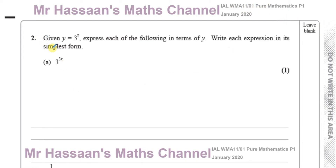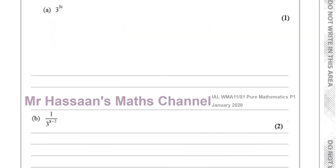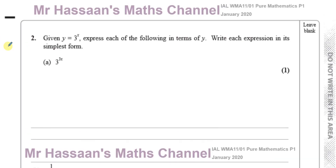Here it's telling us that we're given that y equals 3 to the power of x. We have to express each of the following in terms of y. So we have three different expressions here, a, b, and c, and we have to express them in terms of y, given that y equals 3 to the power of x.